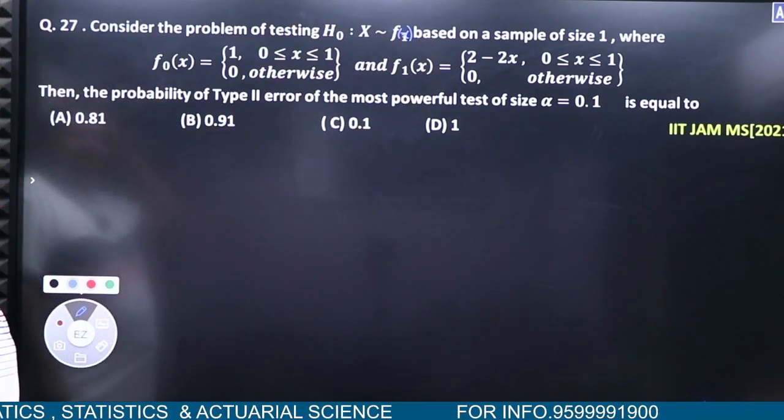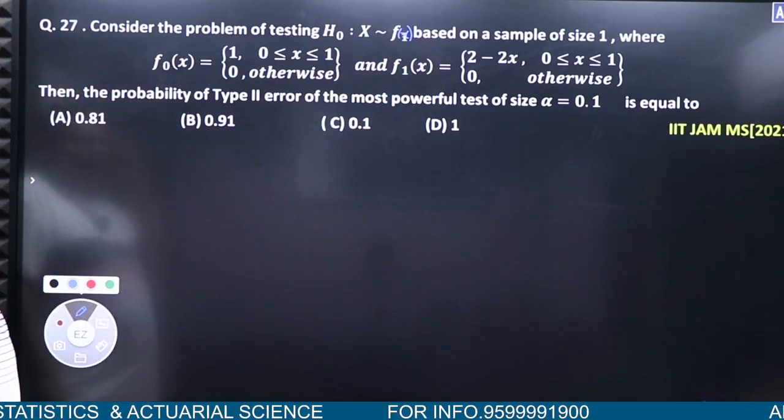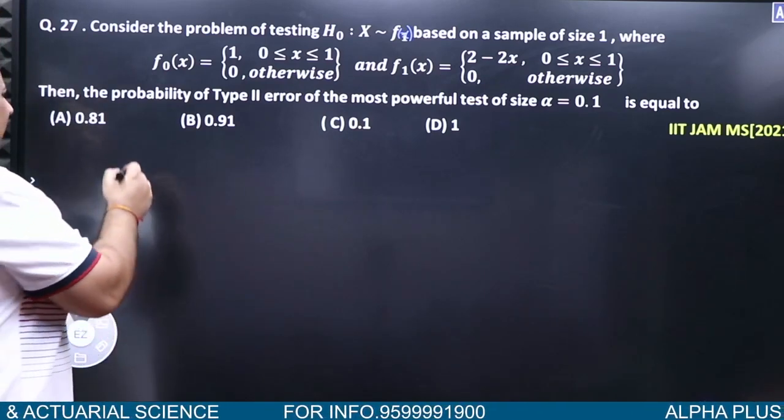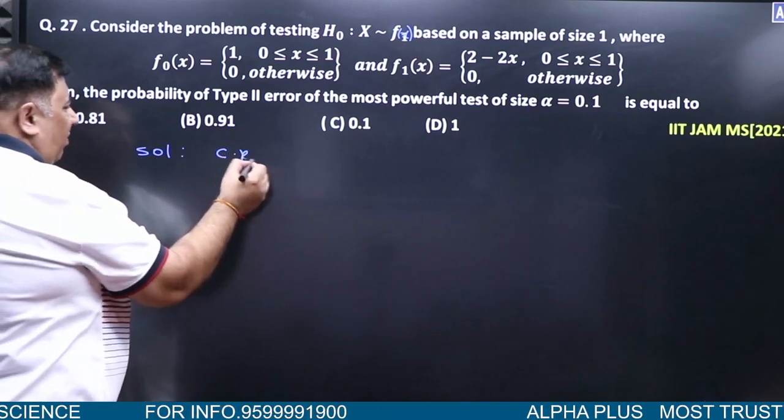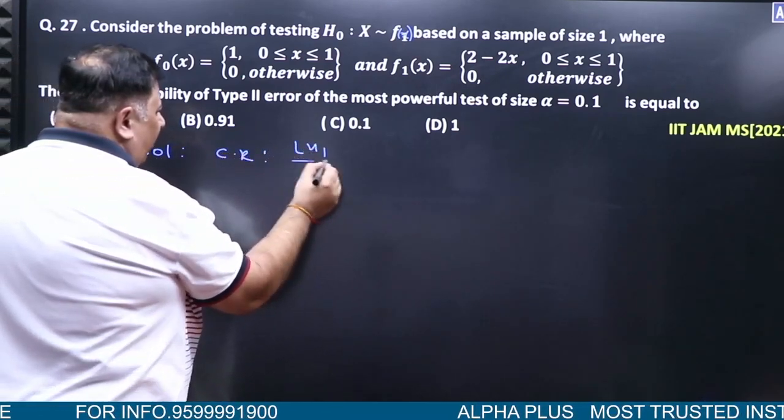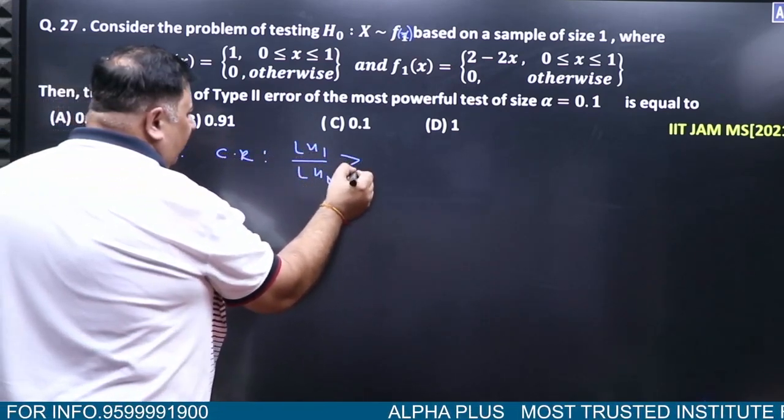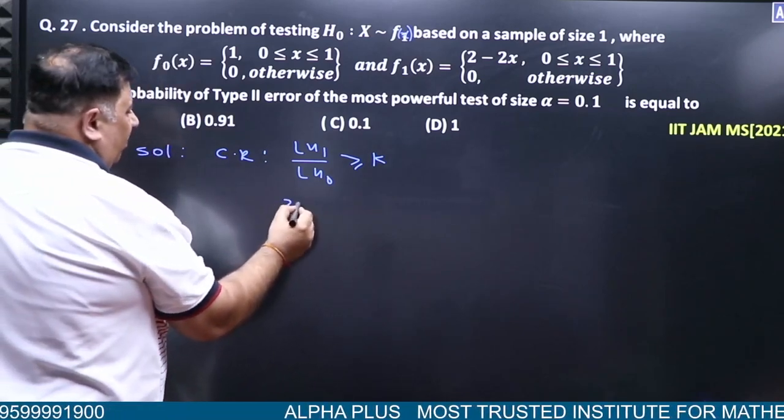For the most powerful test of size α, we need the critical region. The critical region formula is likelihood of H₁ upon likelihood of H₀ is greater than or equal to k, which is 2 minus...